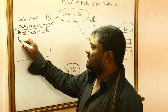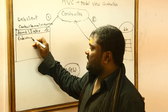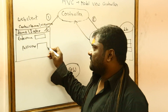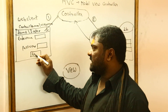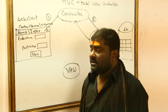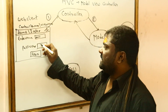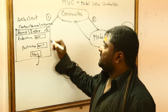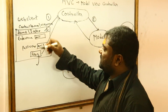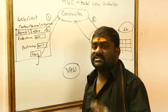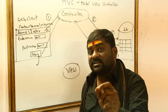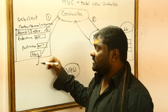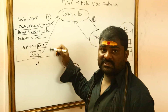For example, consider a login page with a username text box, a password text box, and a sign-in button. Whenever you enter your email as username and password and click the sign-in button, that click is the user request. Similarly, selecting an item in a dropdown list is also called a request. The controller will respond to that user request.